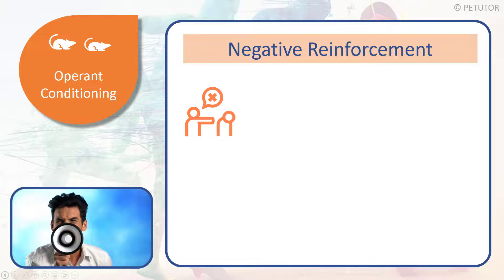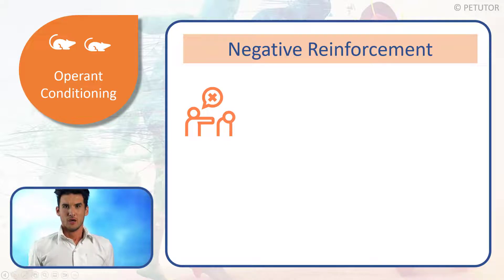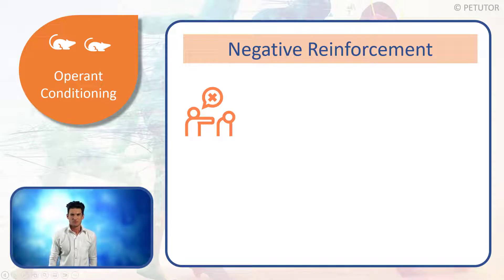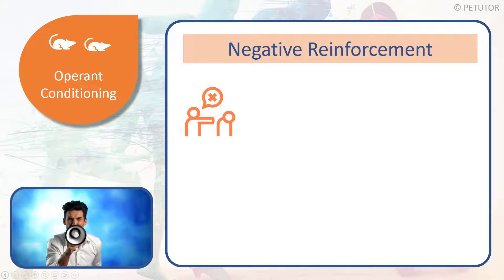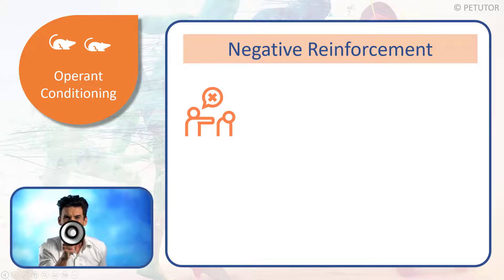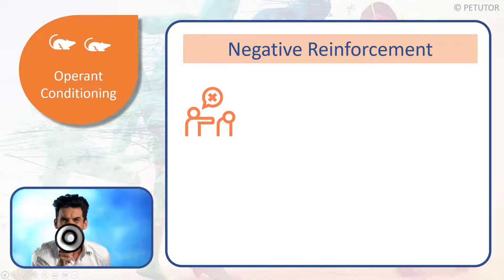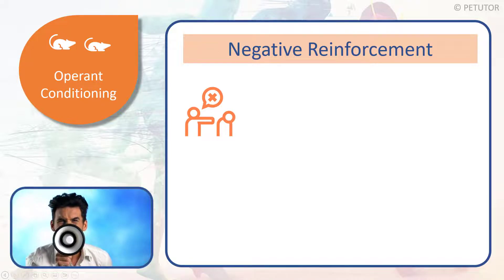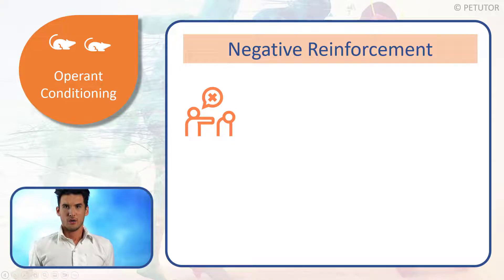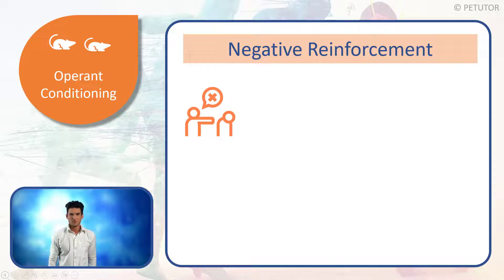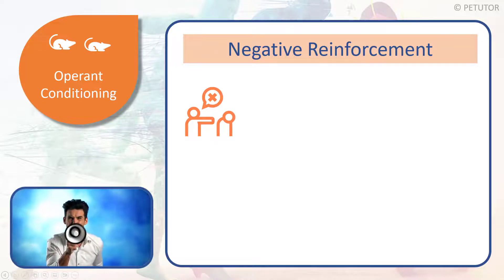So how does negative reinforcement work? Whenever we're doing something wrong, the coach will continue to criticise us, give this negative type of feedback and point out all the things that are wrong. However, as soon as you do something correct — as soon as you carry out the desired response — then the criticism is removed. That is what negative reinforcement is.